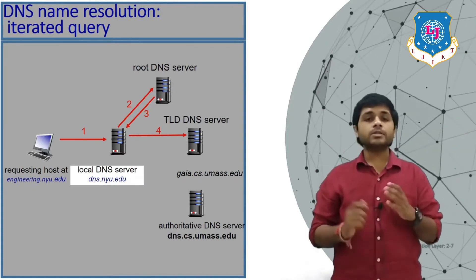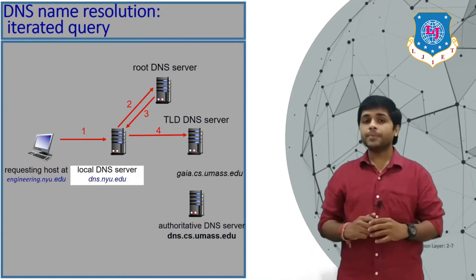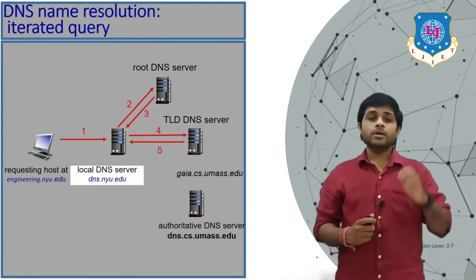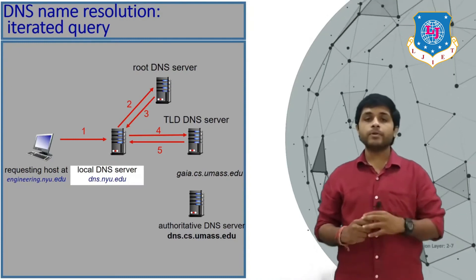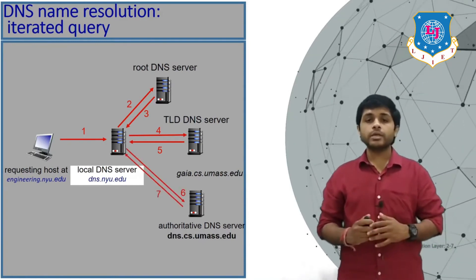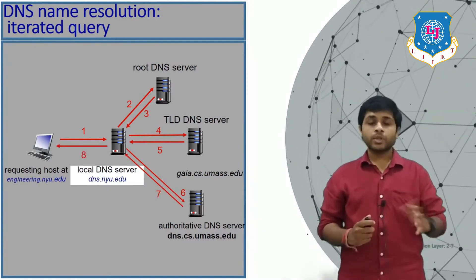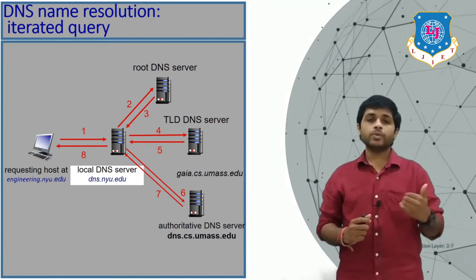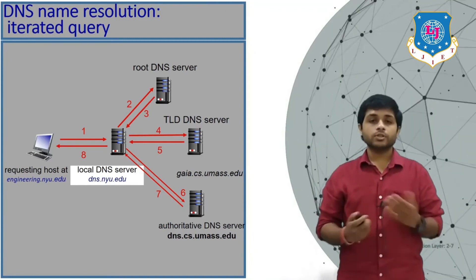If the TLD server doesn't know the IP address, it replies with information about which server to contact next. The local server receives this message and then reaches the authoritative DNS server. The authoritative DNS server knows the IP address and returns it. The local server sends the IP address to your browser, which stores it in memory, and you can then access the website. This is how the iterative query works.